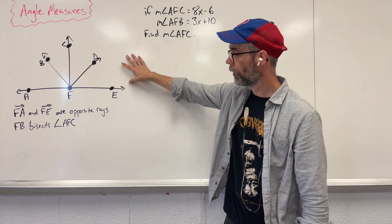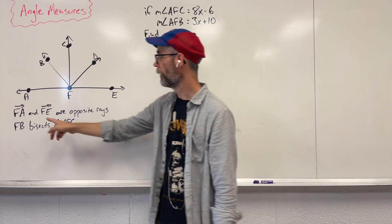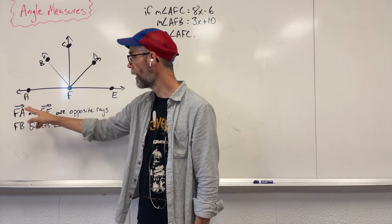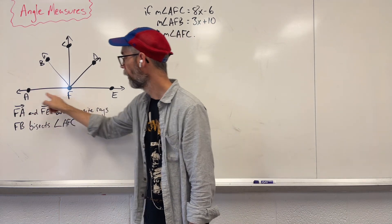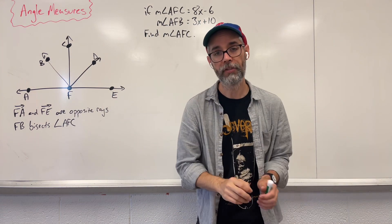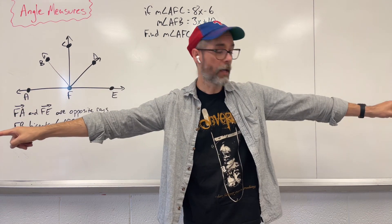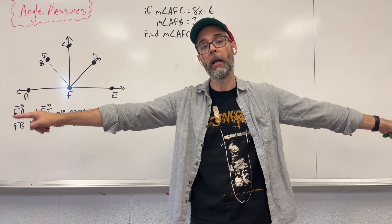So we have a picture here. All I know so far is ray FA and ray FE are opposite rays. One goes that way, one goes that way. When they're opposite, that means they form a straight line.